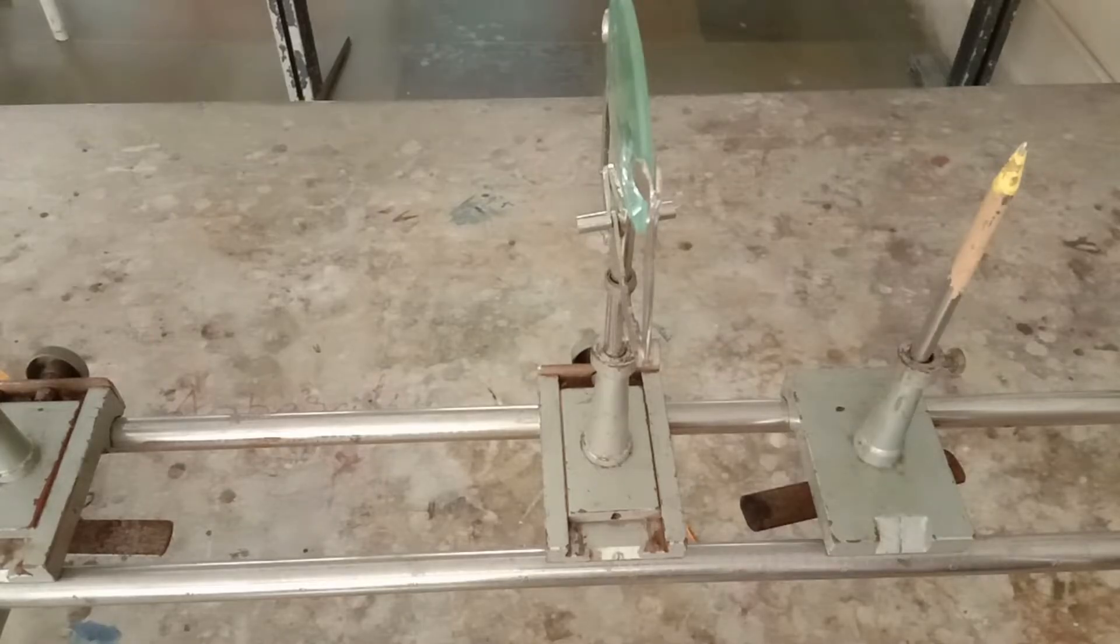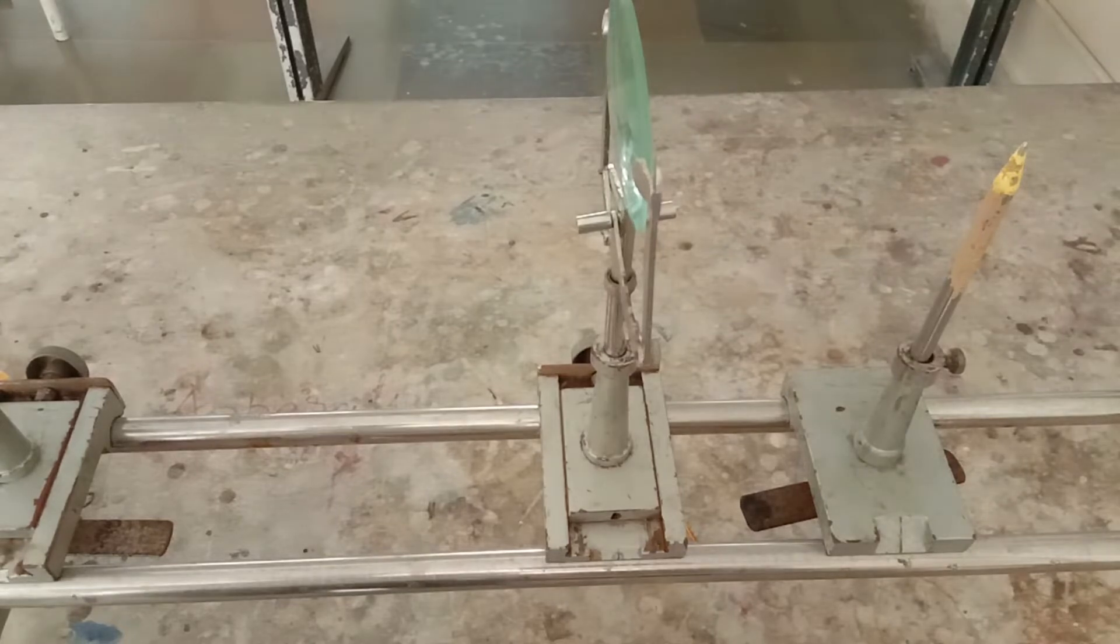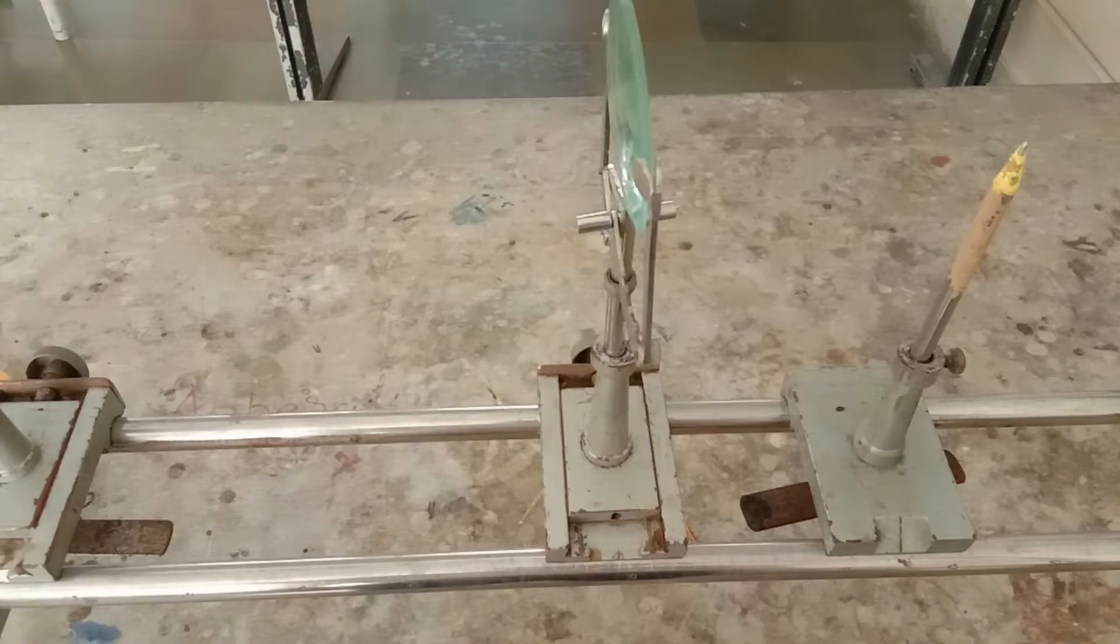In this demonstration I am going to measure the focal length of a convex lens using a plane mirror. This is a standard 10th board practical. In this video you will also be introduced to the parallax error and the methods to remove it.